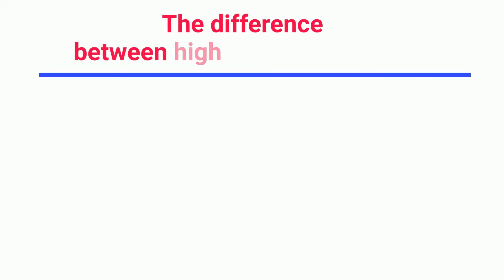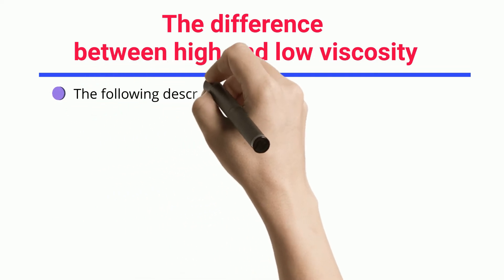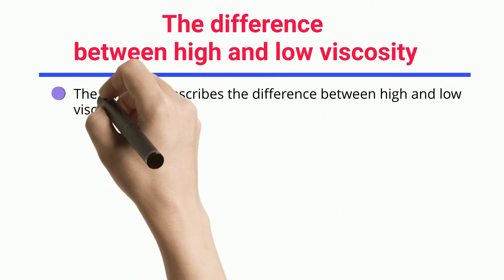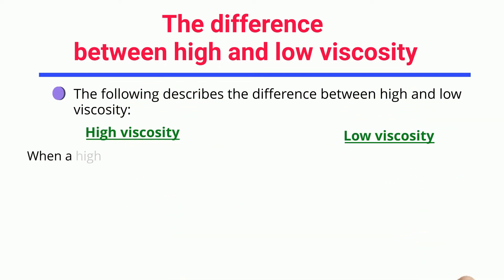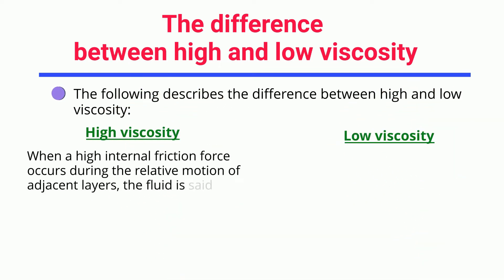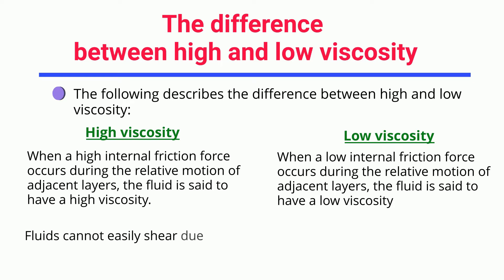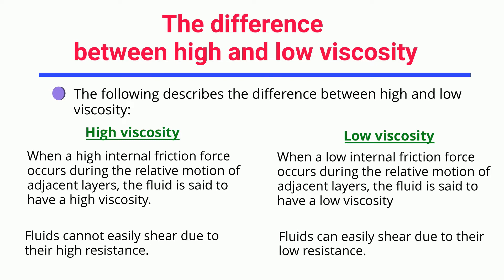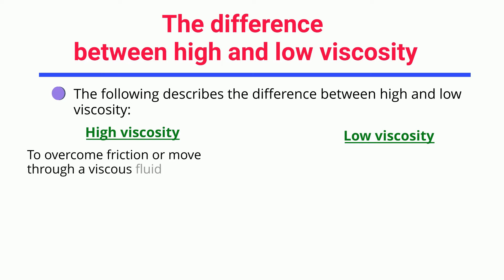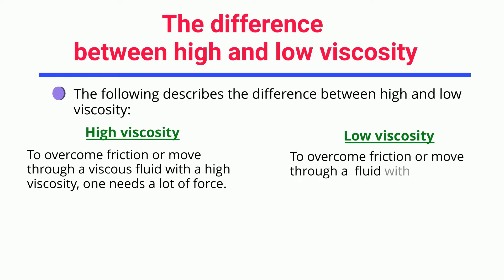The difference between high and low viscosity: When a high internal friction force occurs during the relative motion of adjacent layers, the fluid is said to have a high viscosity. When a low internal friction force occurs, the fluid is said to have a low viscosity. Fluids cannot easily shear due to their high resistance, whereas fluids can easily shear due to their low resistance. To overcome friction in a high viscosity fluid, one needs a lot of force; for a low viscosity fluid, one needs less force.